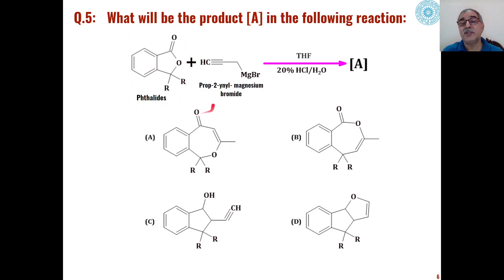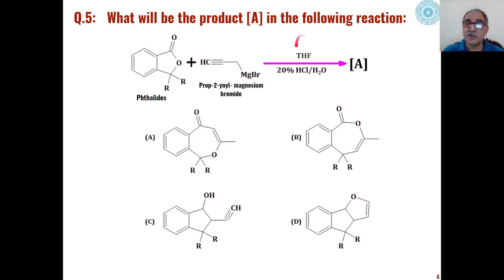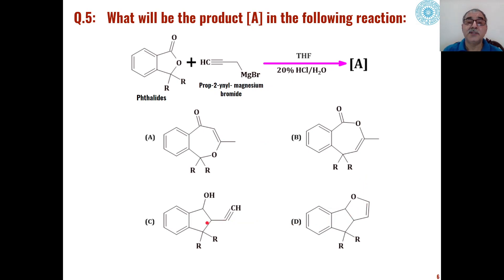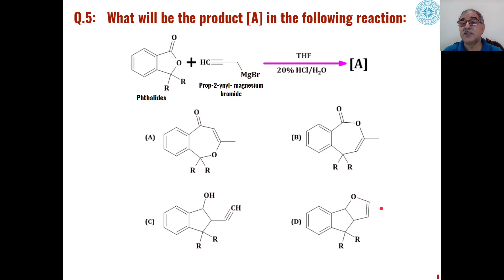These types of phthalides, when reacted with a carbon-carbon triple-bonded Grignard reagent — propargylmagnesium bromide in THF as solvent, followed by reaction with 20% HCl in water — what is the product formed? All these problems are based on very common reactions, but you will find that an abnormal product is formed in all the cases.